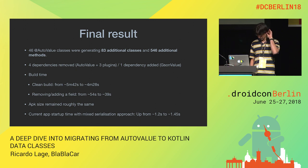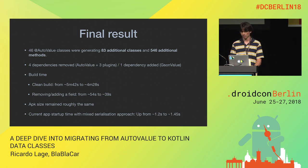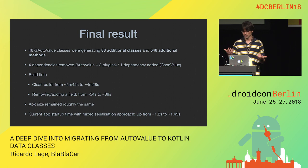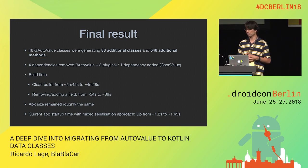In the end, we converted 46 AutoValue classes to Kotlin data classes. Those AutoValue classes were generating extra classes and 500+ methods. We got rid of four dependencies and added one — GSONValue. With less annotation processing, build time improved significantly: clean builds were more than a minute faster, and incremental builds improved as well. APK size remained roughly the same since AutoValue is compile-time. Startup time increased slightly due to the mixed serialization approach, but we're hoping to replace GSON with KotlinX Serialization to address that.